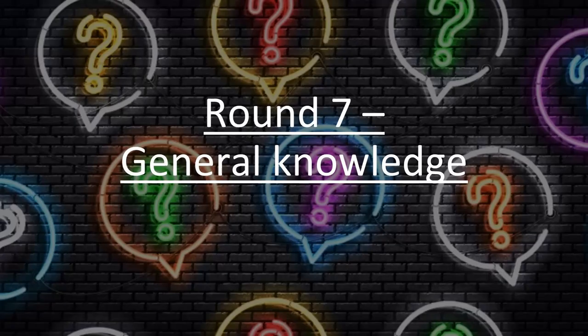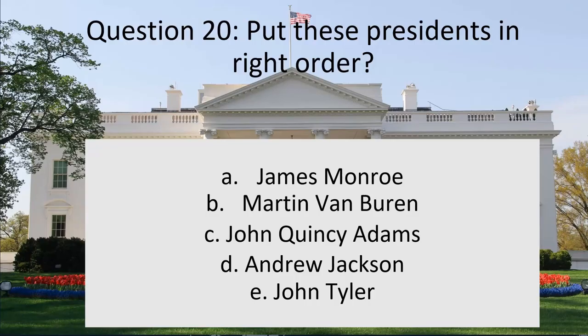Moving on to the general knowledge round. You have to put these US presidents in the correct order: James Monroe, Martin Van Buren, John Quincy Adams, Andrew Jackson, and John Tyler. The correct order is: James Monroe, then John Quincy Adams, then Andrew Jackson, then Martin Van Buren, then John Tyler.